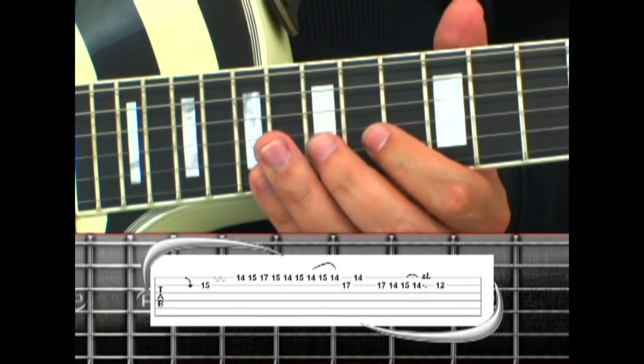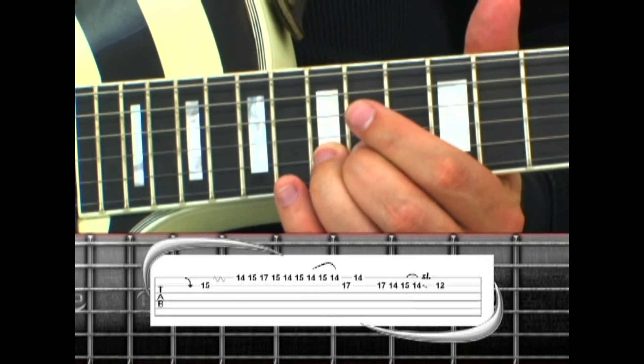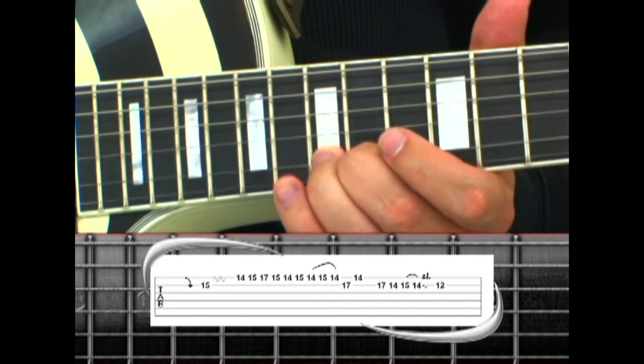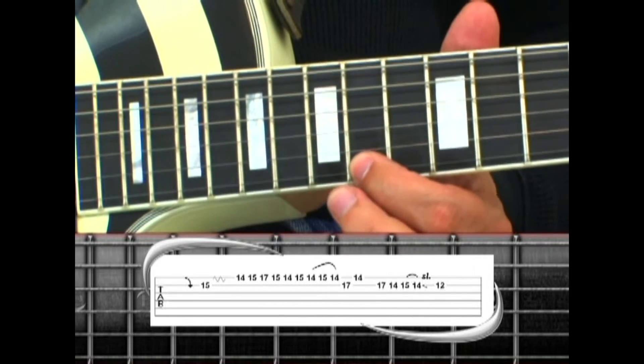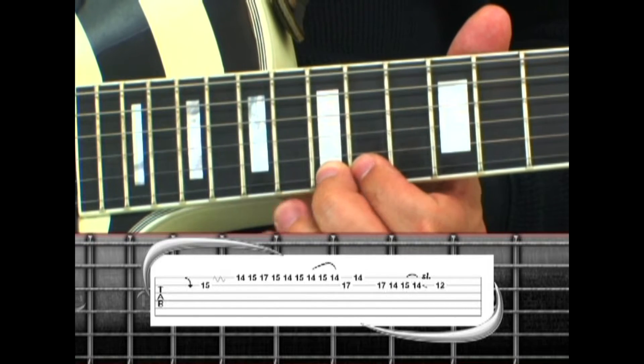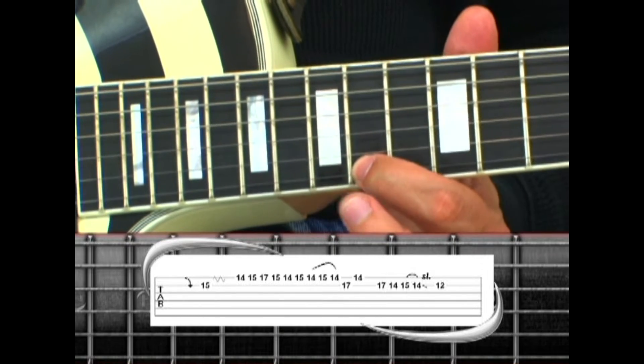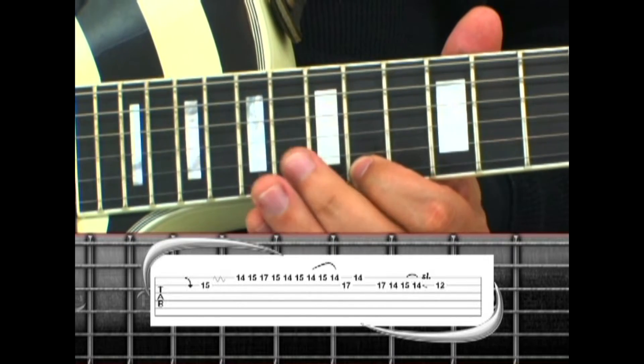Phrase 12 releases the previous bend on the 15th fret. Then play the note with vibrato, to the 1st string 14, 15, 17, 15, 14, hammer pull 14, 15, 14, to 2nd string 17,